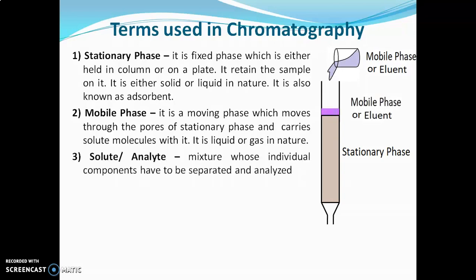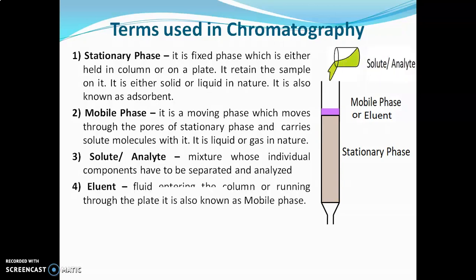Next term is solute or analyte. It is a mixture whose individual components have to be separated and analyzed — in short, solute or analyte means sample mixture. Next term is eluant. It is a fluid entering the column or running through the plate; it is also known as the mobile phase entering the column.